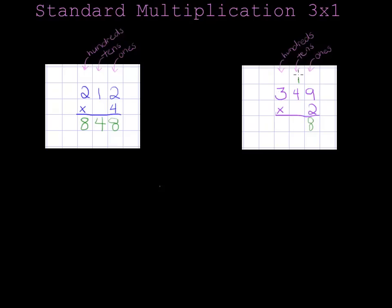So now I do 2 times 4, which is 8. But I can't forget the one that I carried. I have to add that on so that now I have 9. And that goes in the tens column underneath the 4. Now I'll do 2 times 3, which is 6. And that lines up underneath the 3 in the hundreds column. And my answer is 698.